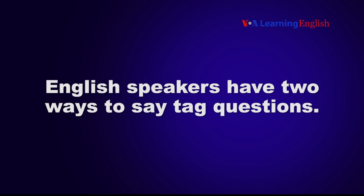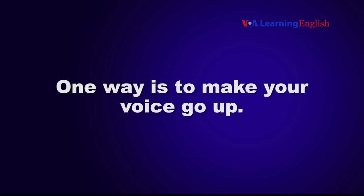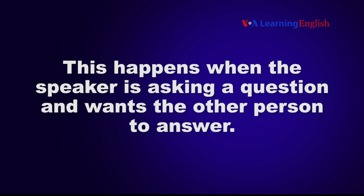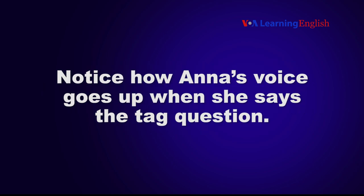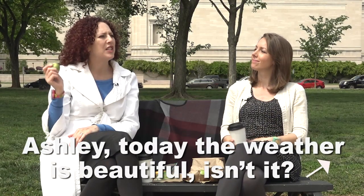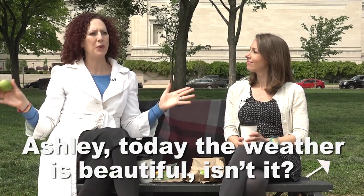English speakers have two ways to say tag questions. One way is to make your voice go up. This happens when the speaker is asking a question and wants the other person to answer. Notice how Anna's voice goes up when she says the tag question. Ashley, today the weather is beautiful, isn't it?